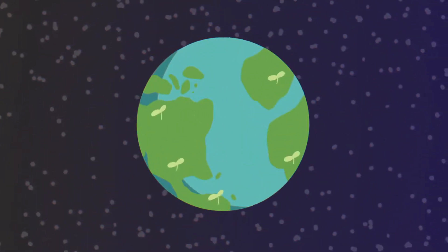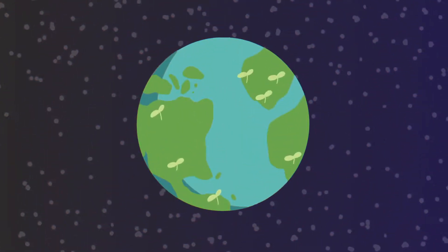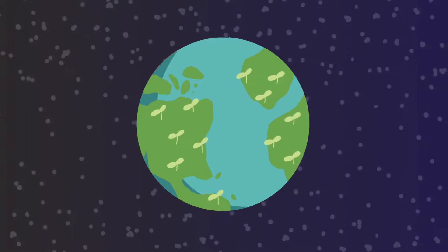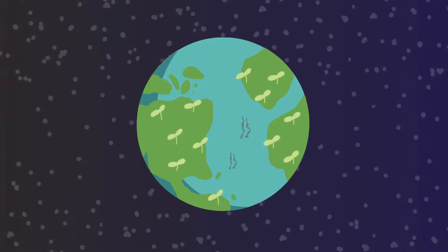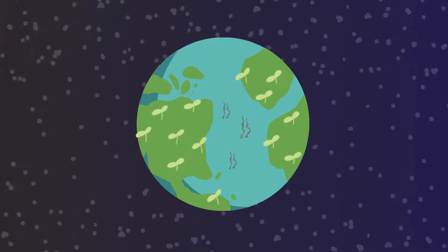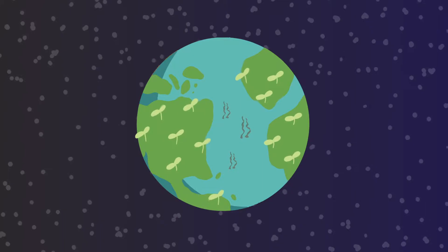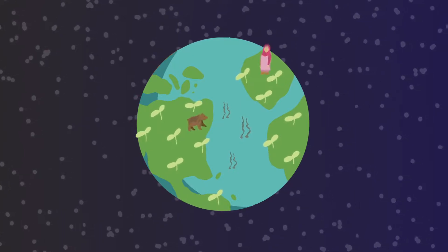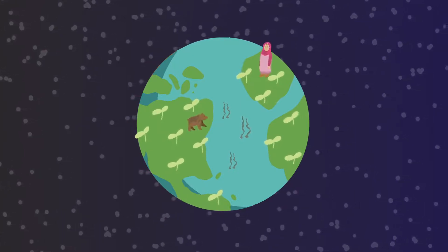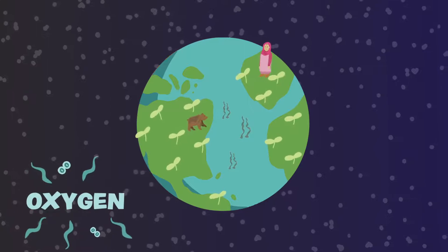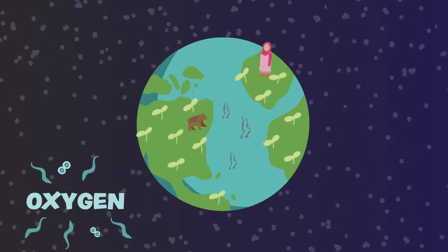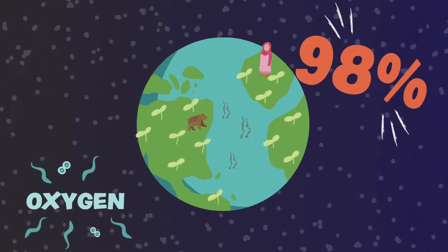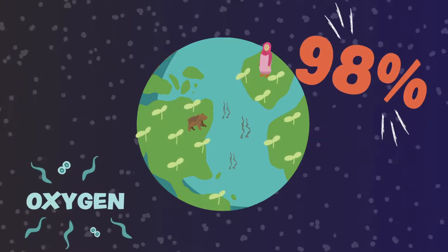Plants were the first living organisms on Earth and covered most of the land on the planet, and even in the oceans too. Without plants, life on Earth would not be possible for animals or for humans. People and animals need oxygen to live. Plants produce 98% of all the oxygen we breathe.